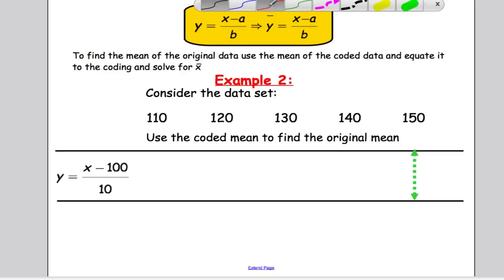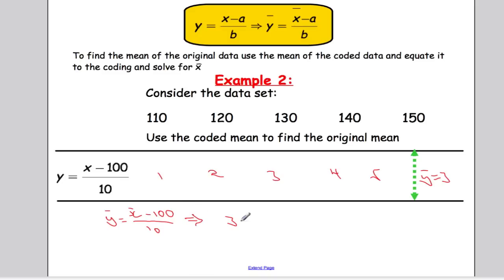If you remember our example from earlier, we had 1, 2, 3, 4, 5, and y bar was equal to 3. If I want to find x bar, well from up here we know that y bar equals x bar minus a, which is 100, over 10. So substituting 3 in for y bar, we get 3 equals x bar minus 100 over 10. So 30 equals x bar minus 100, which means x bar, adding 100 to both sides, is 130.